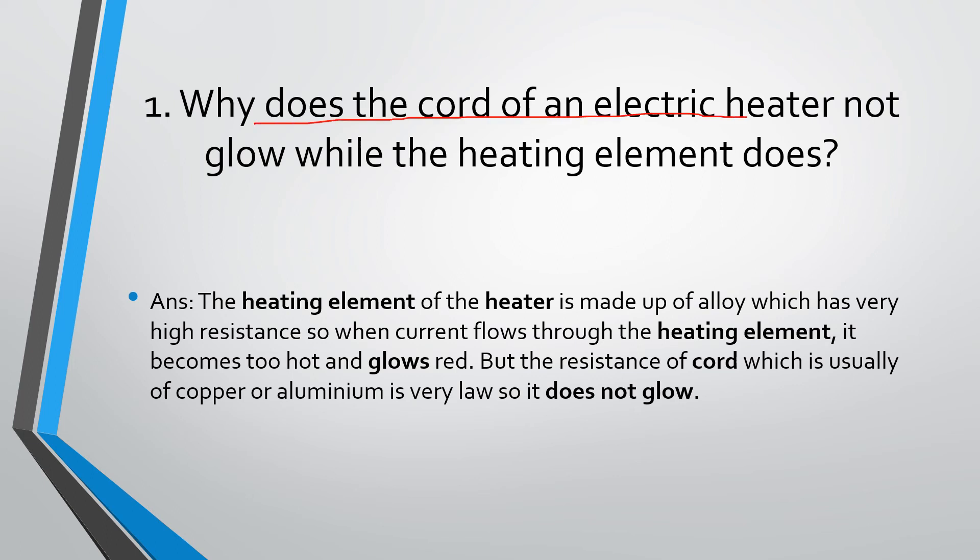Why does the cord of an electric heater not glow while the heating element does? The heating element of the heater is made up of alloy which has very high resistance. When current flows through the heating element, it becomes too hot and glows red. But the resistance of the cord, which is usually copper or aluminum, is very low, so it does not glow.